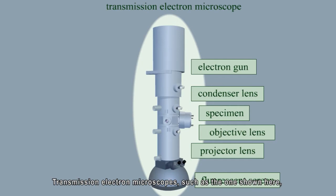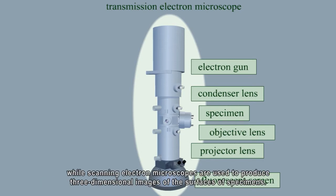Transmission electron microscopes, such as the one shown here, are used to produce two-dimensional images of internal structures of cells, while scanning electron microscopes are used to produce three-dimensional images of the surface of specimens.